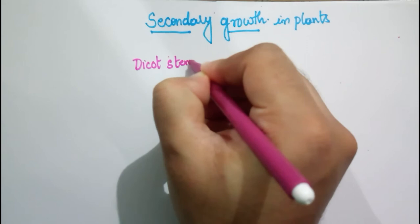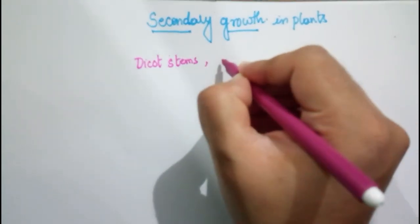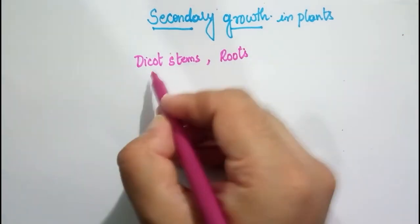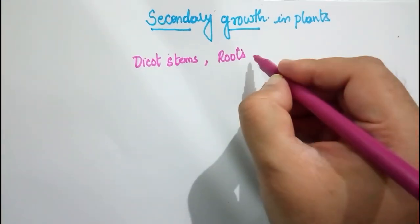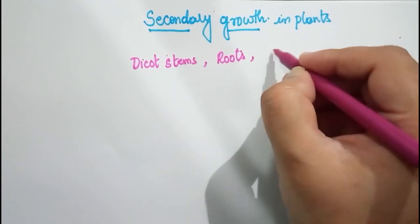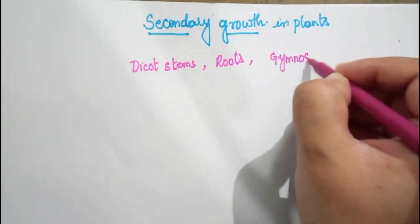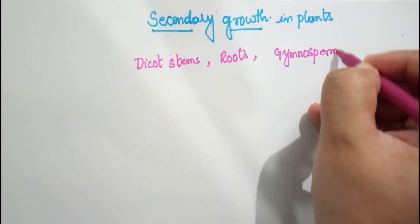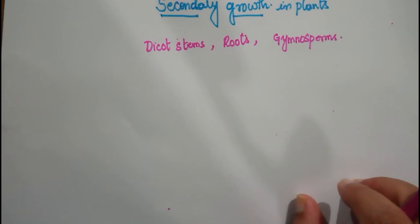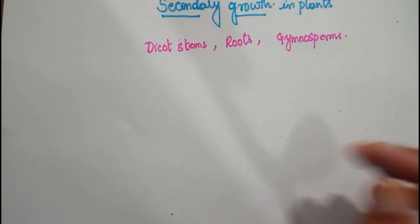Secondary growth occurs in the stems of dicots, in the roots of dicots, and in the case of gymnosperms, secondary growth can also be seen.